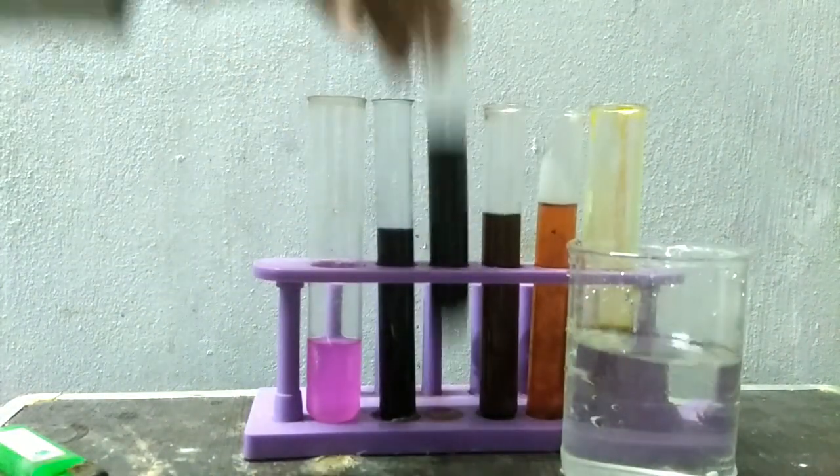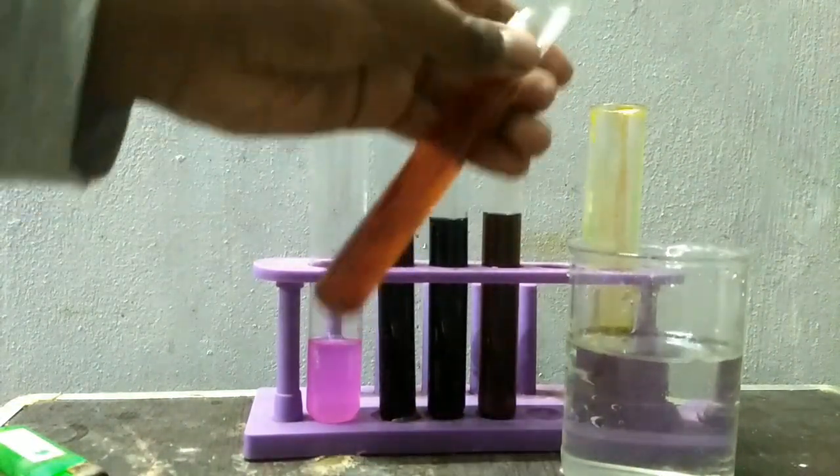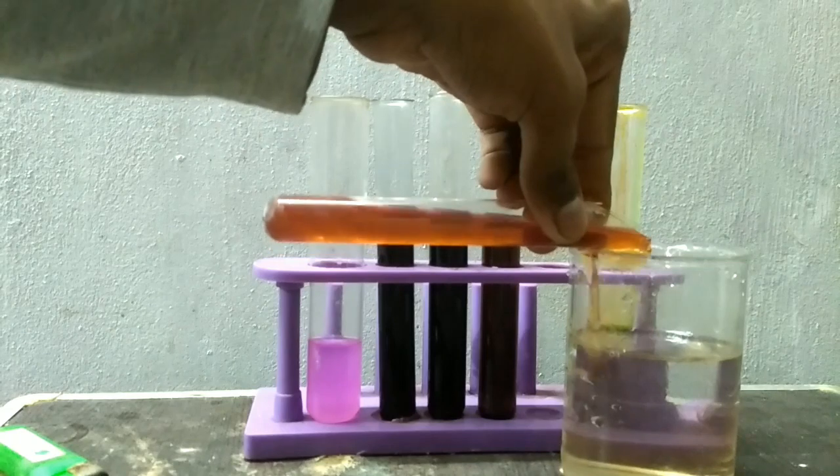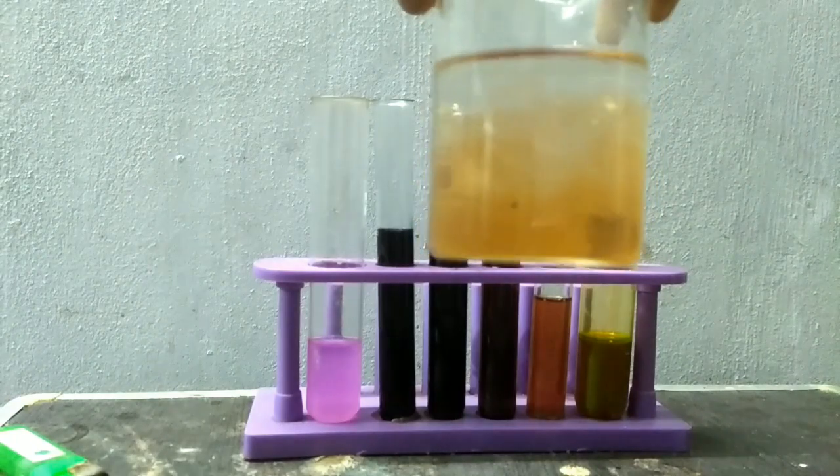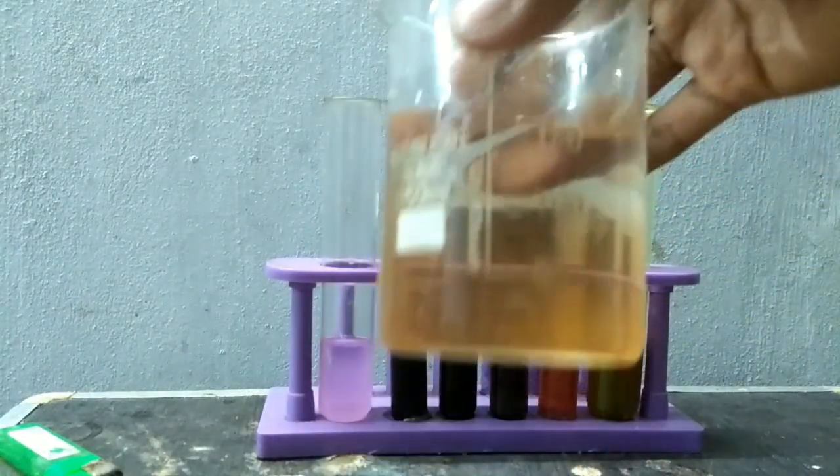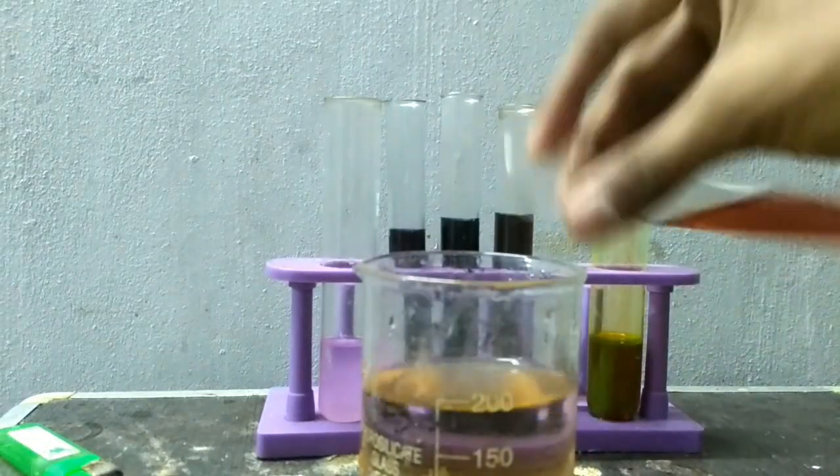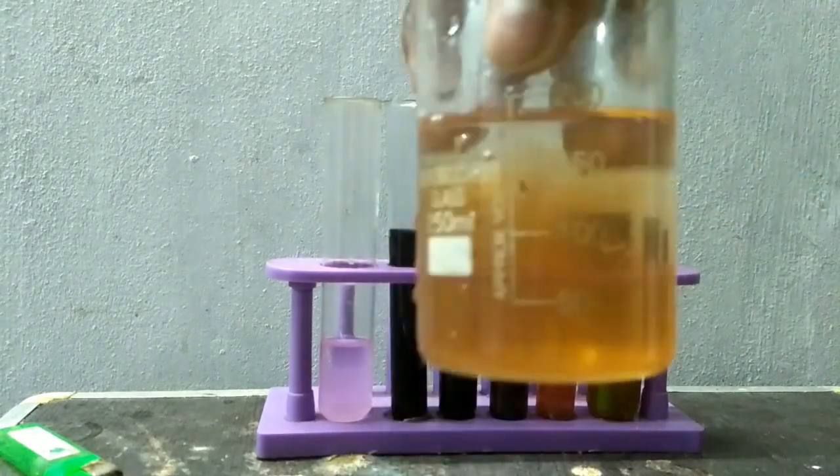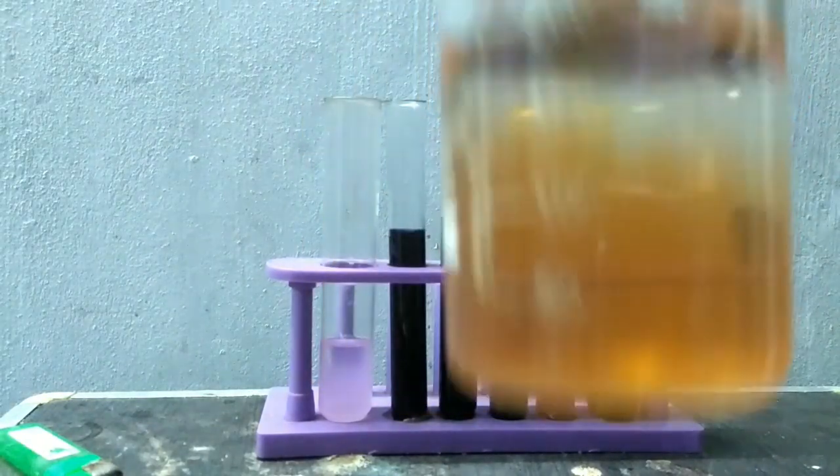Now observe the color of the dyes we have prepared by adding in water. This is the salicylic acid one. You can see that the orange color is there, or this is the red color instead. Let's add more. In the camera it's orange but I can see it red.